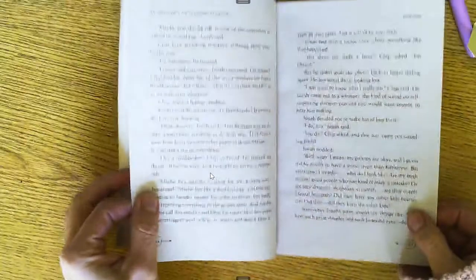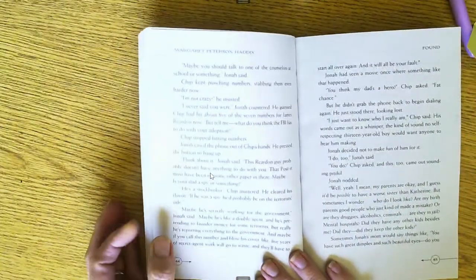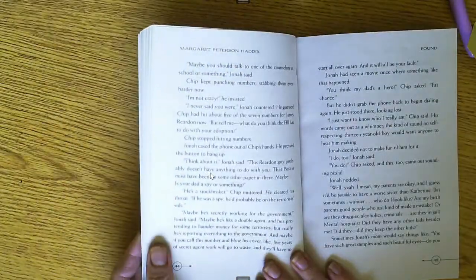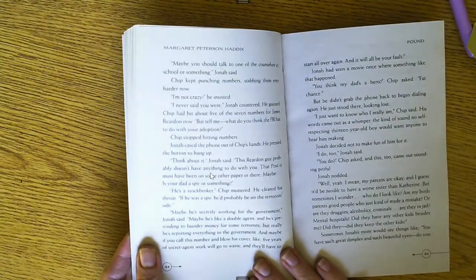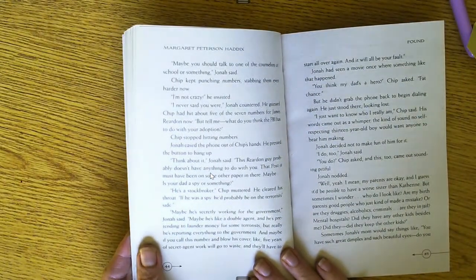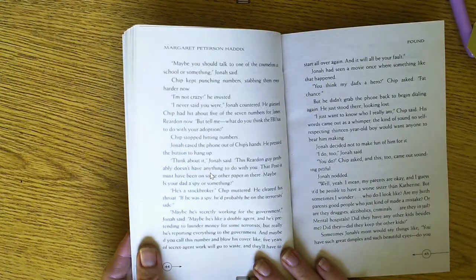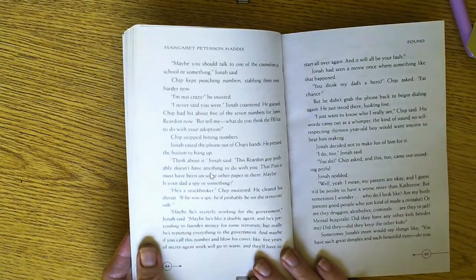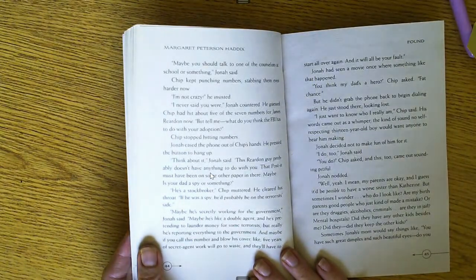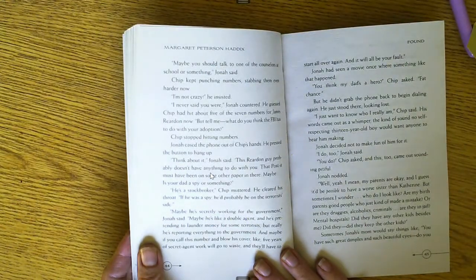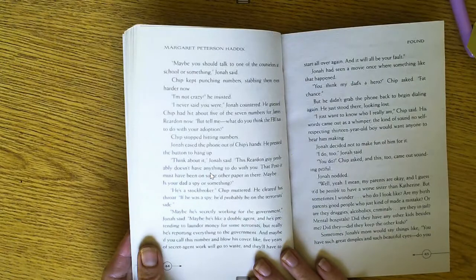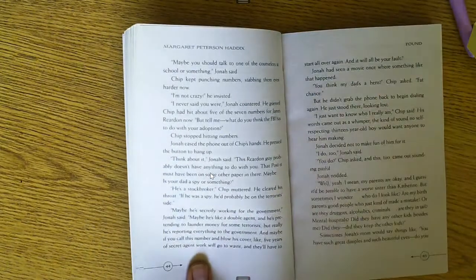Doesn't quite have the knack, it sounds like. Maybe you should talk to one of the counselors at school or something, Jonah said. Chip kept punching numbers, stabbing them even harder now. I am not crazy, he insisted. I never said you were, Jonah countered. He guessed Chip had hit about five of the seven numbers for James Reardon now. But tell me, what do you think the FBI has to do with your adoption?